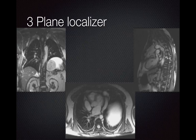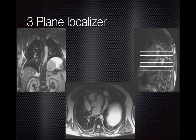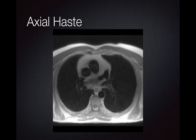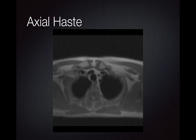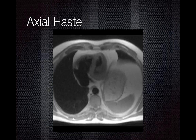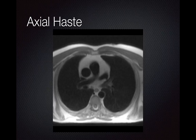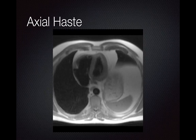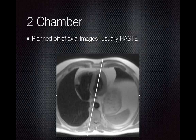In general, we're always going to start with a three-plane localizer, giving us our axial, coronal, and sagittal images. From that, we acquire another stack of axial images, generally from above the aortic arch to below the level of the heart. Here's our axial stack of HASTE images — a black blood set — used to look for gross abnormalities and to set up our two-chamber view.